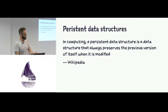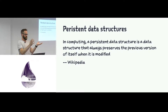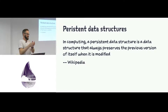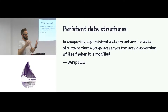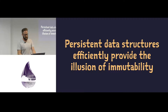A persistent data structure is a structure that always preserves the previous version of itself when modified. 'Modified' should be in air quotes, because it's not really modified. You start off with some data structure, run some code over it that returns the next version, but the next version basically references the old version without deleting or modifying it. Persistent data structures efficiently provide the illusion of immutability — that's what makes them awesome.